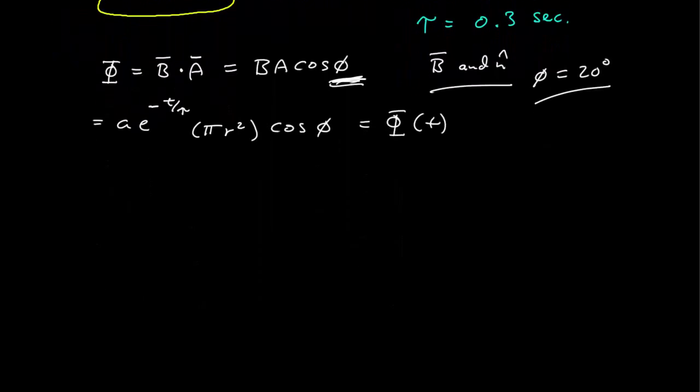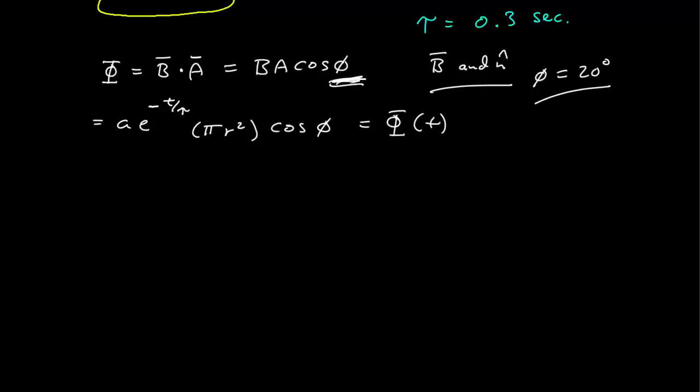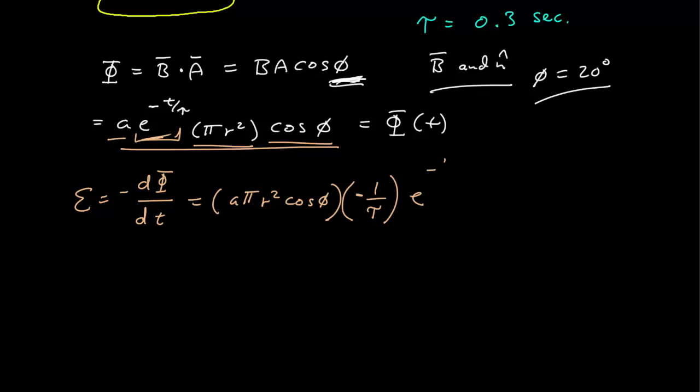If we want to calculate the EMF due to this flux, we're going to use Faraday's Law, which says the EMF is the derivative of flux with respect to time. So now I need to differentiate this thing. Everything's constant except the exponential, so we have A pi r squared cosine phi, and now taking the derivative using the chain rule, I get negative 1 over tau coming down, e to the minus T over tau.